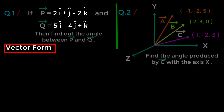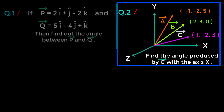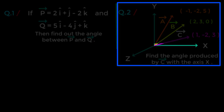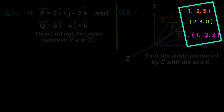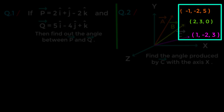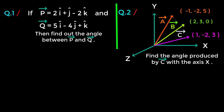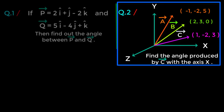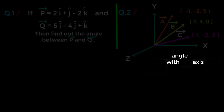In this second question, we also have two vectors, but unit vectors are absent. Since there are no unit vectors, this is not a vector form. So we need to find another pattern. Look at these words: 'angle with axis.' These words are our key point here, and they represent another form of question pattern.